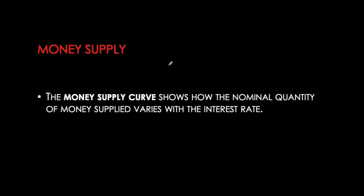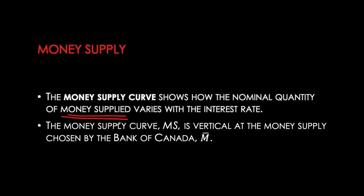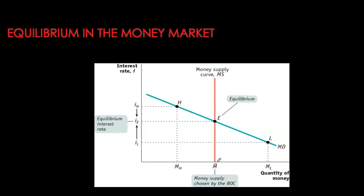Now let's move on to money supply. Money supply looks at the relationship between nominal interest rates and quantity of money supplied. Money is printed by the central bank. In this model, we assume the Bank of Canada can arbitrarily set the quantity of money in the economy. Money supply is set at some level M-bar and does not respond to interest rate fluctuations, giving us a vertical money supply curve at the level set by the central bank.